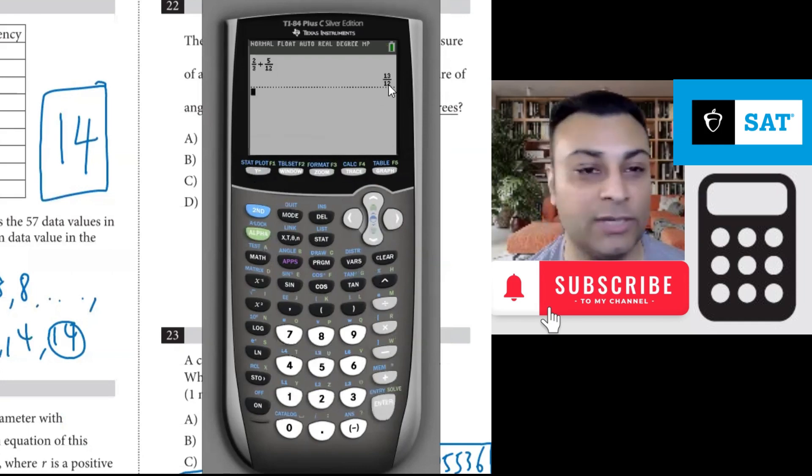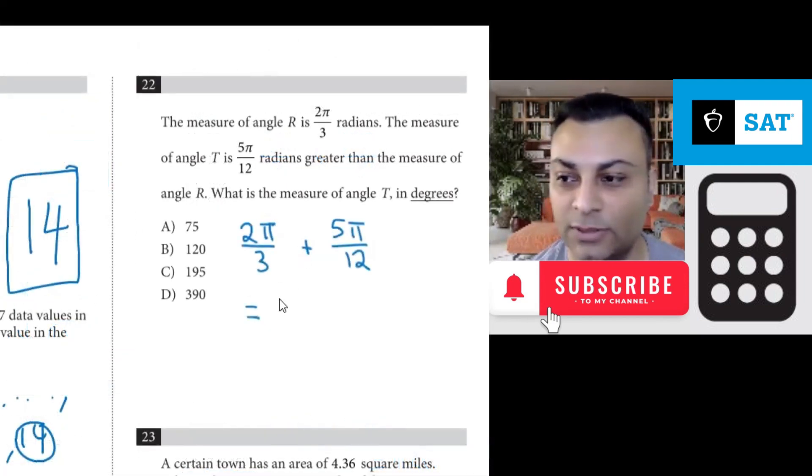It tells you it's 13 over 12. So this becomes 13π/12 and this is still in radians.